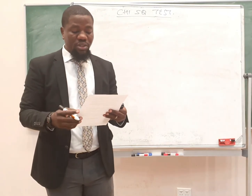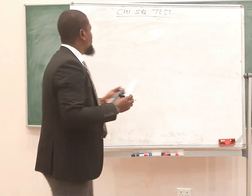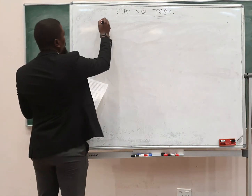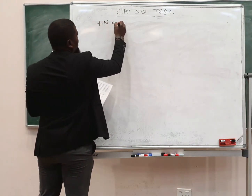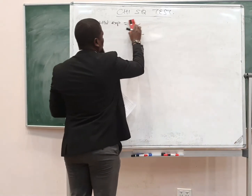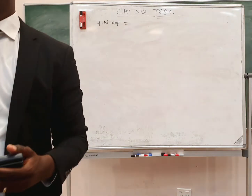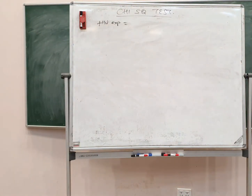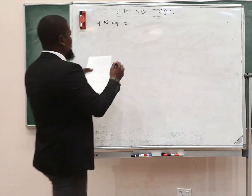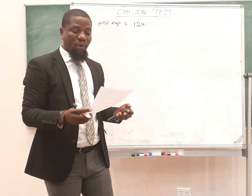He enrolls HIV-exposed children — initially the question said 112, but one student has a version showing 124. Let's use 124. So he enrolls 124 HIV-exposed children.